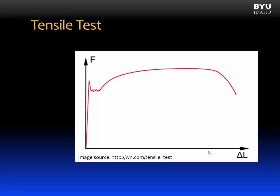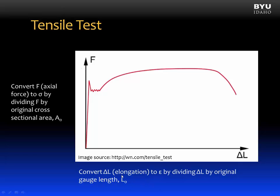But it could even be more useful if we change the vertical axis from force to stress, normal stress. And we can convert force to normal stress by dividing the force by the original cross-sectional area. It would also be useful to change elongation on the horizontal axis to strain. And we can convert elongation to normal strain by dividing change in length, elongation, by the original gauge length, L0. That was the length of the specimen prior to testing.